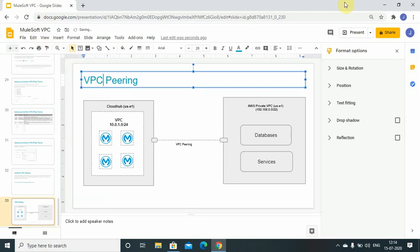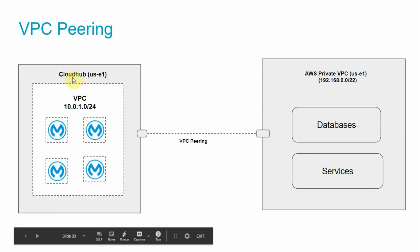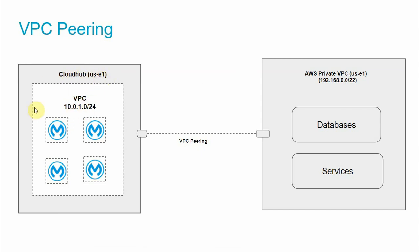For example, you have a CloudHub environment in us-east-1 with VPC 10.0.1.0/24, and you have an AWS private VPC with subnet 192.168.0.0/22 also in us-east-1. You can set up VPC Peering between your CloudHub VPC and that AWS private VPC. An important requirement: when creating a VPC Peering, your CloudHub VPC and the AWS private VPC must be in the same region.